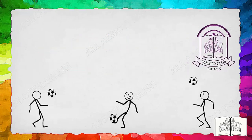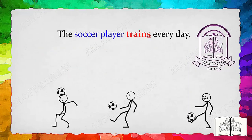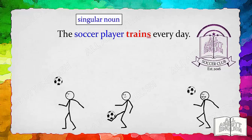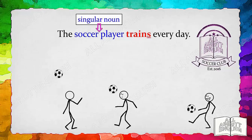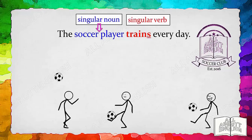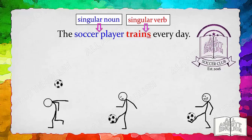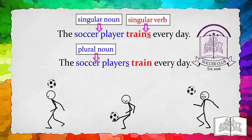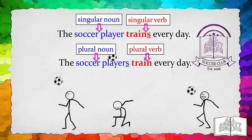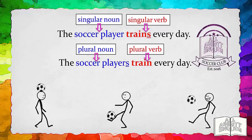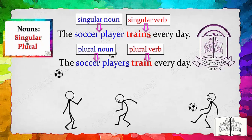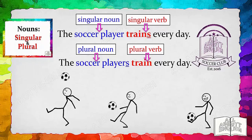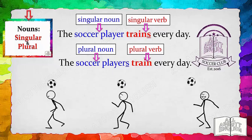Let's take a look at two more example sentences. 'The soccer player trains every day.' The soccer player, which is the subject, is a third-person singular noun; it requires the singular verb 'trains,' which ends in S. 'The soccer players train every day.' The soccer players is a plural noun; it requires a plural verb 'train,' which does not end in S. Don't confuse singular and plural nouns with singular and plural verbs.